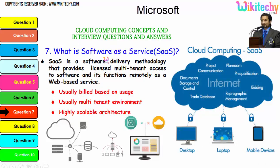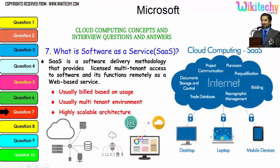Software as a Service (SaaS) is a software delivery methodology that provides licensed, multi-tenant access to software, and it functions remotely as a web-based service. It should be built based on usage, usually in a multi-tenant environment with a highly scalable architecture. In practice, you rent software from the cloud and access it via a browser — that's how Software as a Service works.